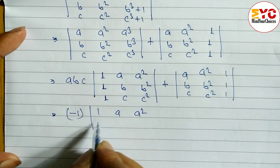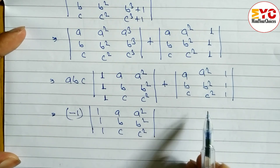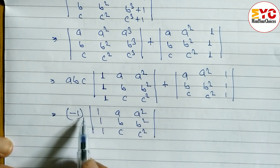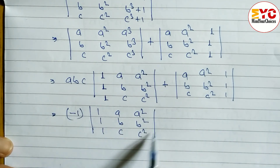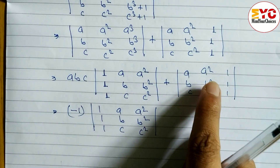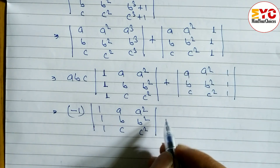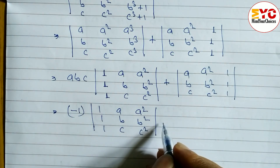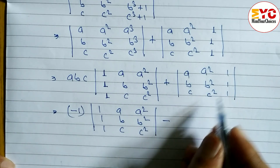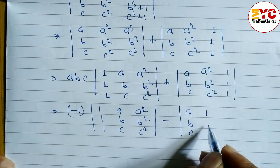Now we need to make the two matrices the same so we can cancel them. We will make this first matrix negative and the second positive and then cancel. When we interchange two columns, we must write a negative sign. First, let's interchange column 2 and column 3: the matrix becomes a, b, c in the first row; 1, 1, 1 in the second row; a squared, b squared, c squared in the third row.